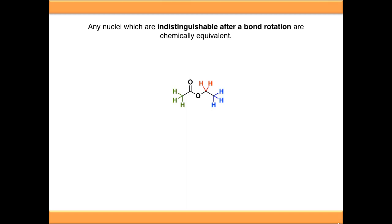Let's look at ethyl acetate again, focusing on these green protons on the left-hand side. If we rotate around this carbon-carbon bond and draw this as a sawhorse projection, what we mean by indistinguishable after a bond rotation is if you try and keep track of this proton here, as I rotate this bond around, you can tell that the proton is now down here.